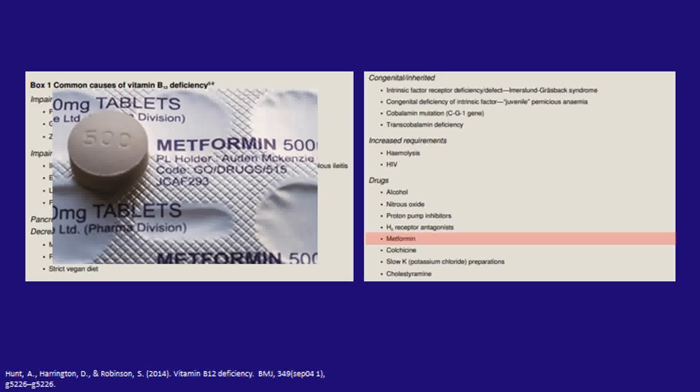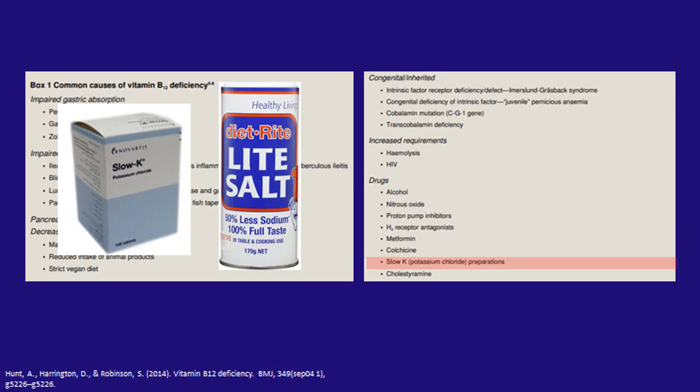Metformin is also associated with B12 deficiency, commonly seen in most of our patients. The mechanism is somewhat elusive, but as a precaution I put all of my patients taking metformin on a B12 supplement. Potassium also gets a lot of press in the ketogenic community and is associated with B12 deficiency. Without solid data on it, I would simply suggest caution.